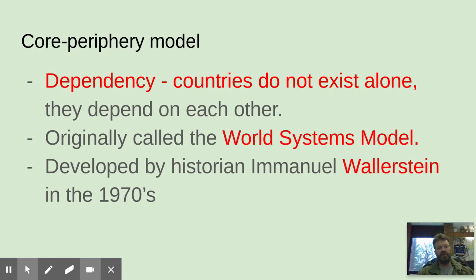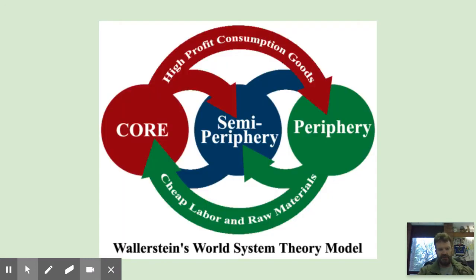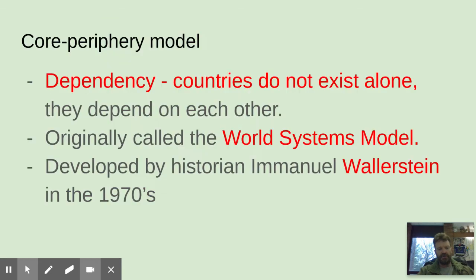The core-periphery model is all about dependencies — countries do not exist alone, we all depend upon each other. This was originally called the World Systems Model, developed by historian Emanuel Wallerstein in the 1970s. So Wallerstein is the core-periphery model.